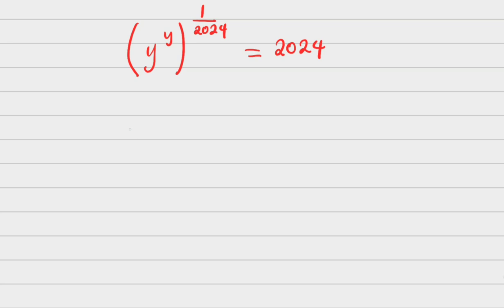If I do that, I'm going to have [(y^(1/2024))^y]^2024 = 2024^2024.